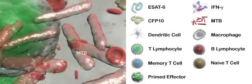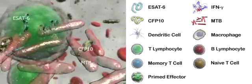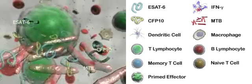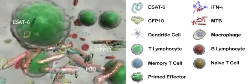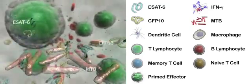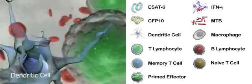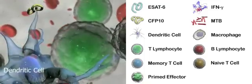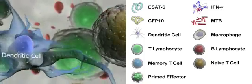The primary immune response to Mycobacterium tuberculosis, or MTB, involves antigen being detected and processed by an antigen-presenting cell, such as a dendritic cell or macrophages.